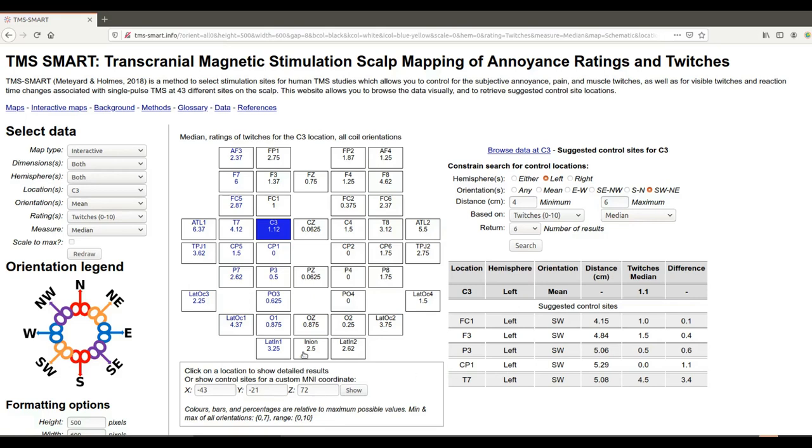One final thing I'll show you here: if you don't have an electrode location that you're trying to do TMS, so instead you have an MNI coordinate, a brain atlas coordinate.